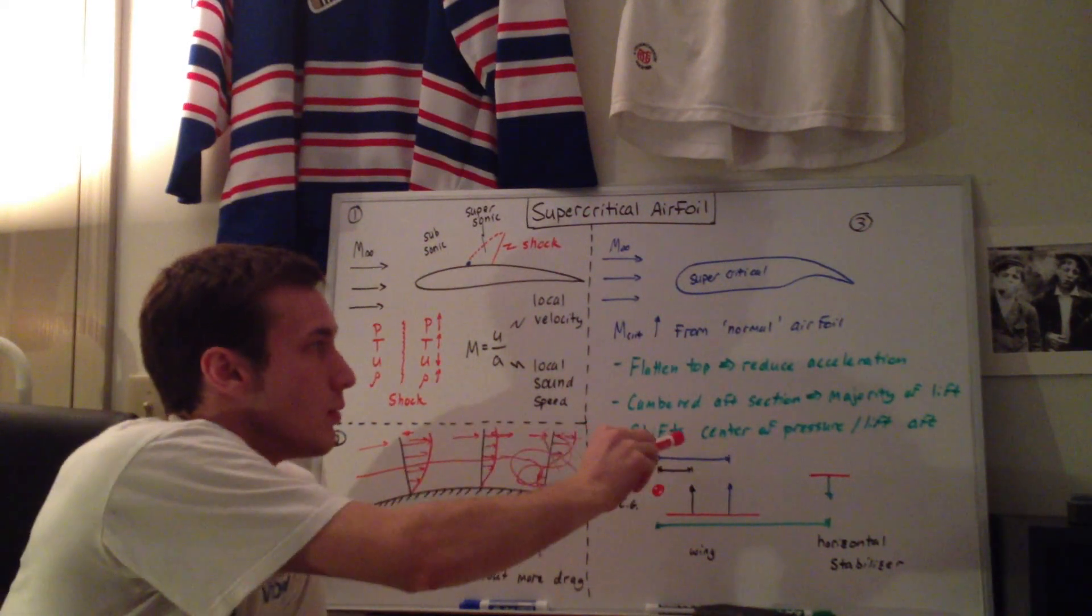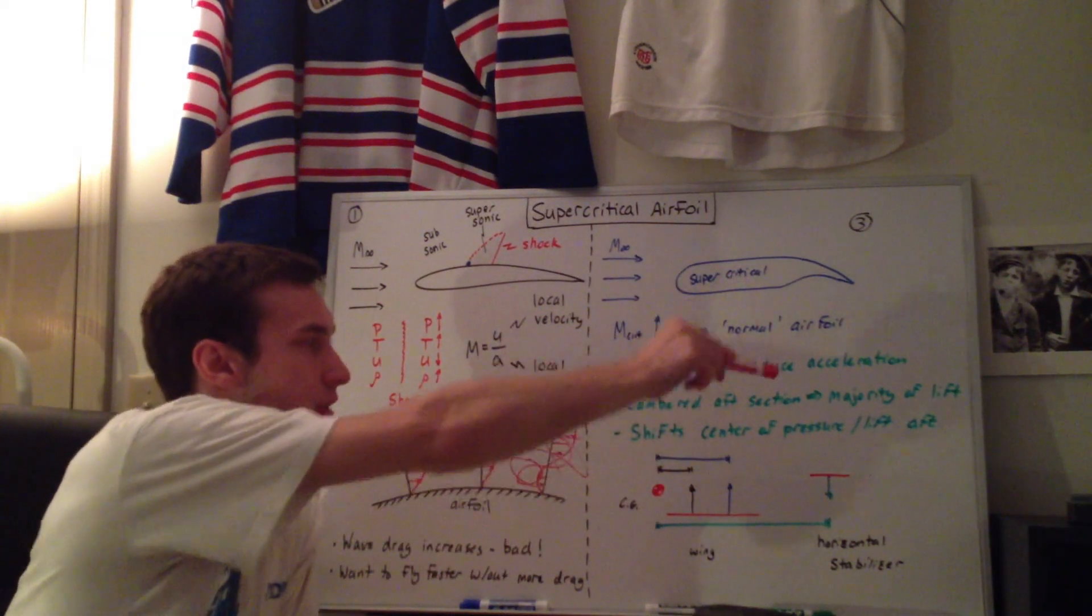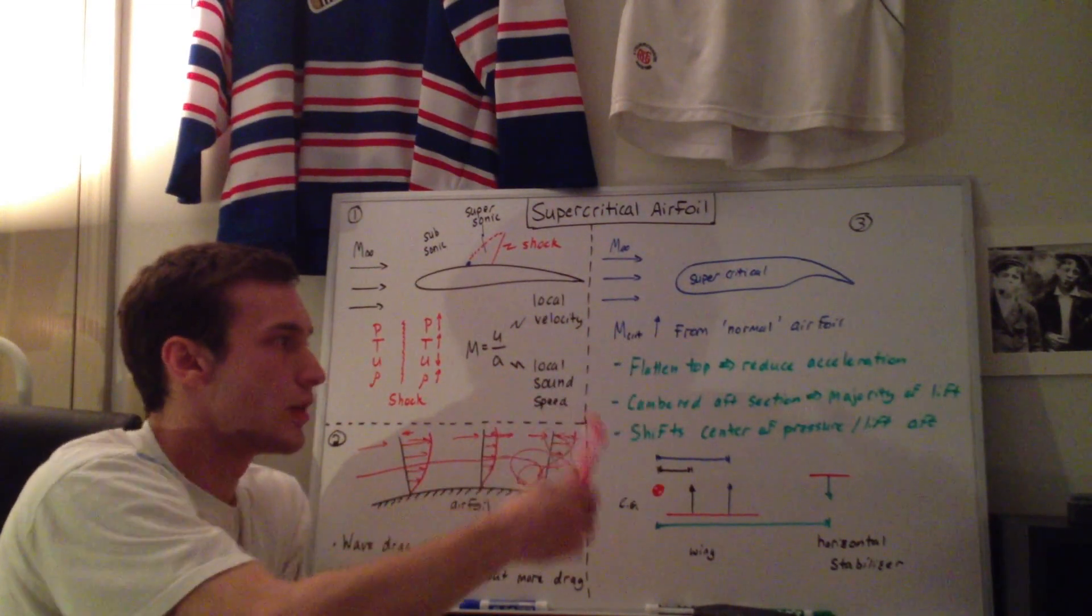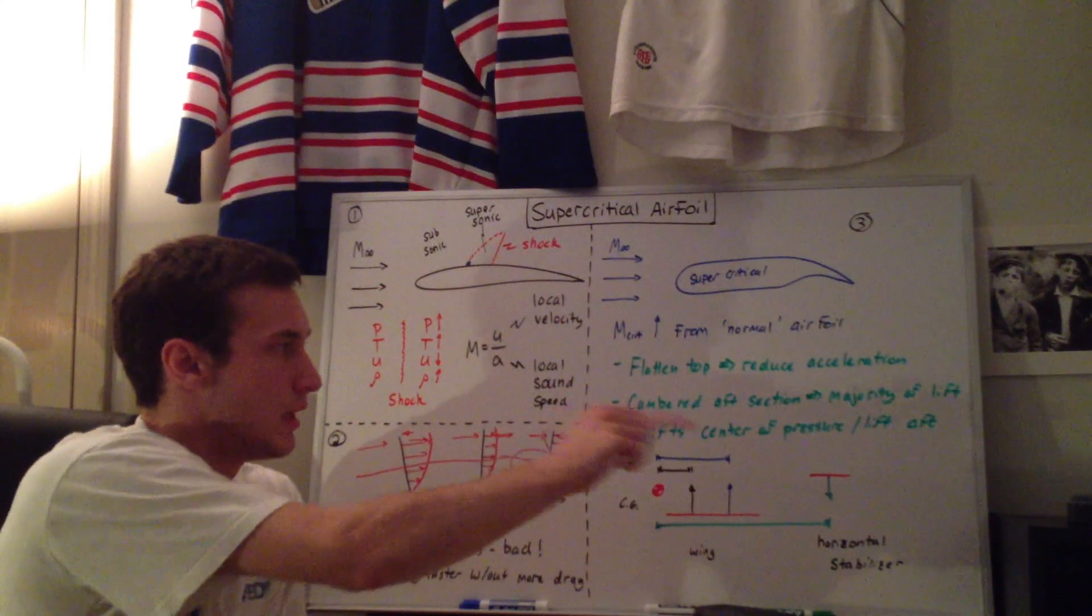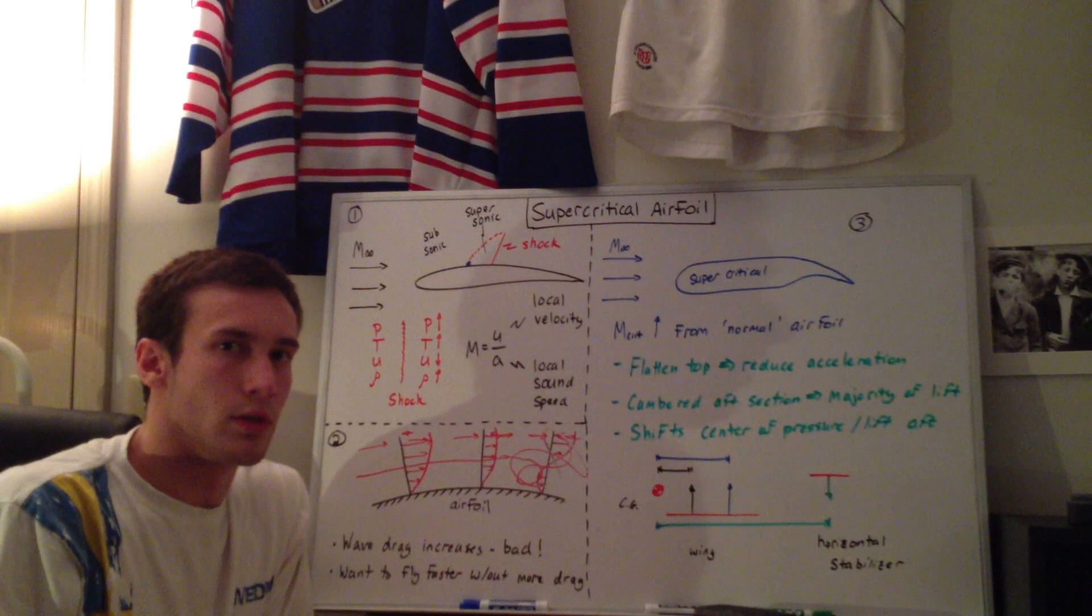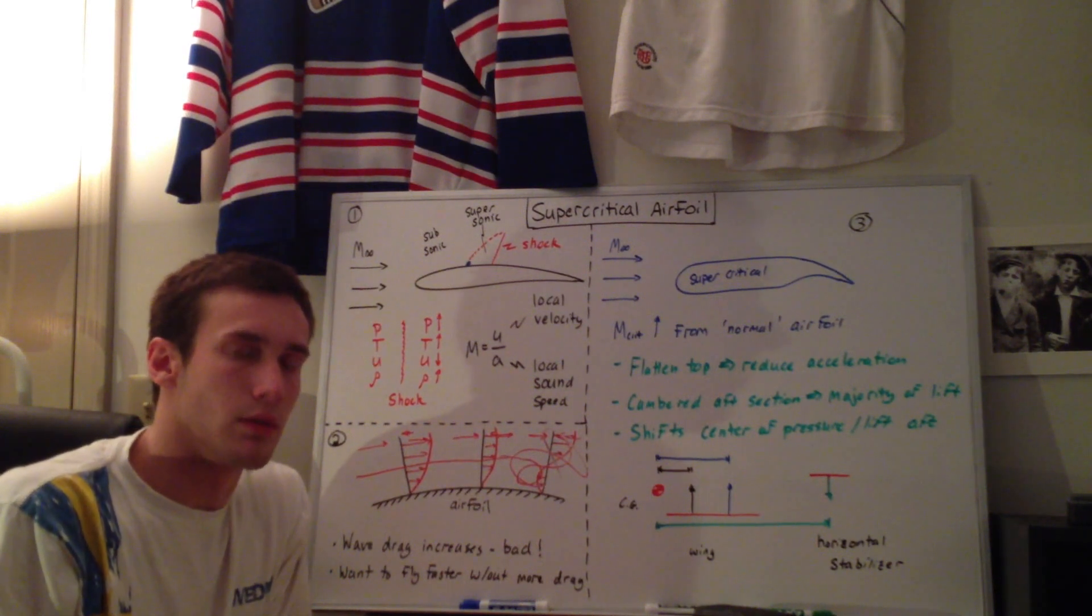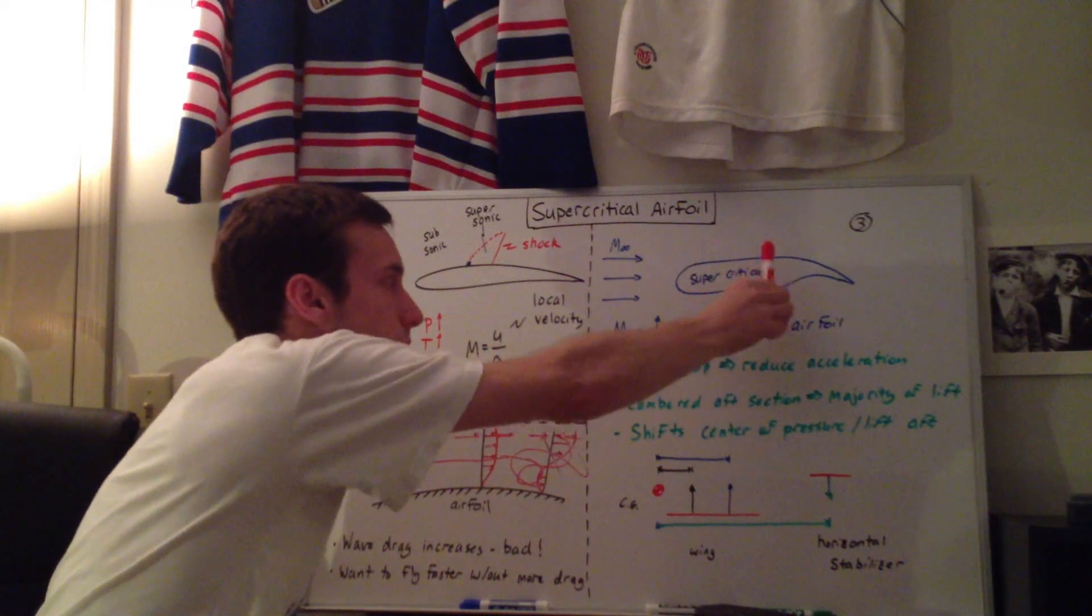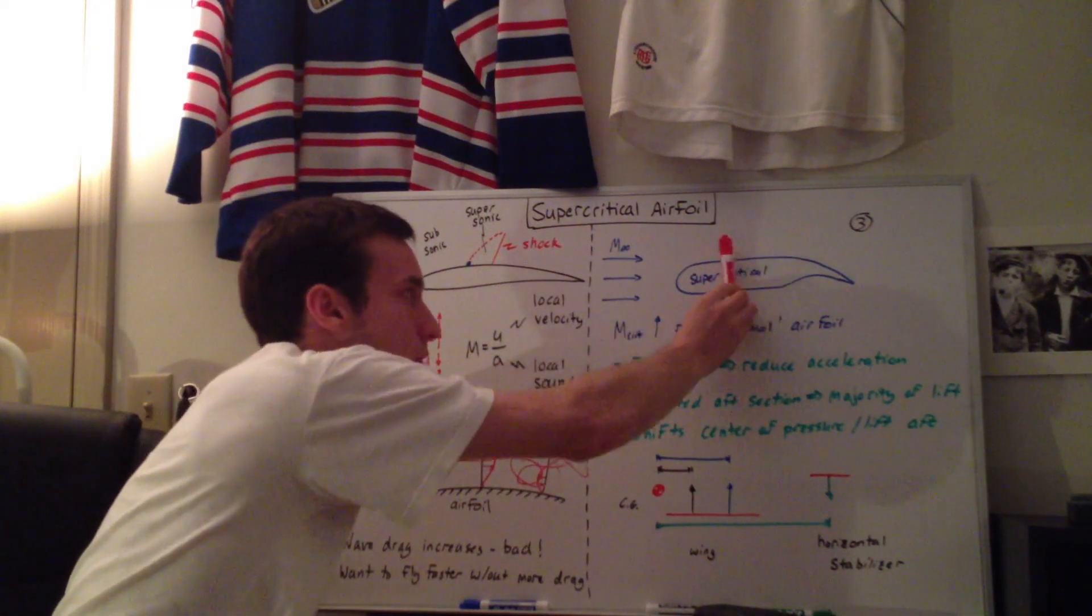Consequently, when the aft section is cambered, what you do is you end up shifting the center of pressure, or the center of lift, aft. Some of you will probably comment on my nomenclature here, but I'll go over center of pressure, aerodynamic center, center of lift, that kind of stuff in a later video. But essentially it's moving kind of where the resultant force on the airfoil is, it's moving it backwards.